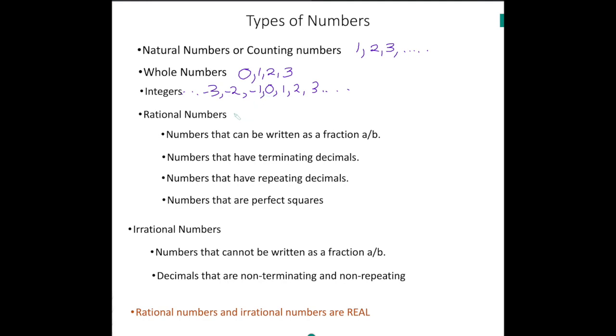Rational numbers are your natural numbers, whole numbers, and integers. So if your number is a natural number, a whole number, or an integer, it is considered rational.